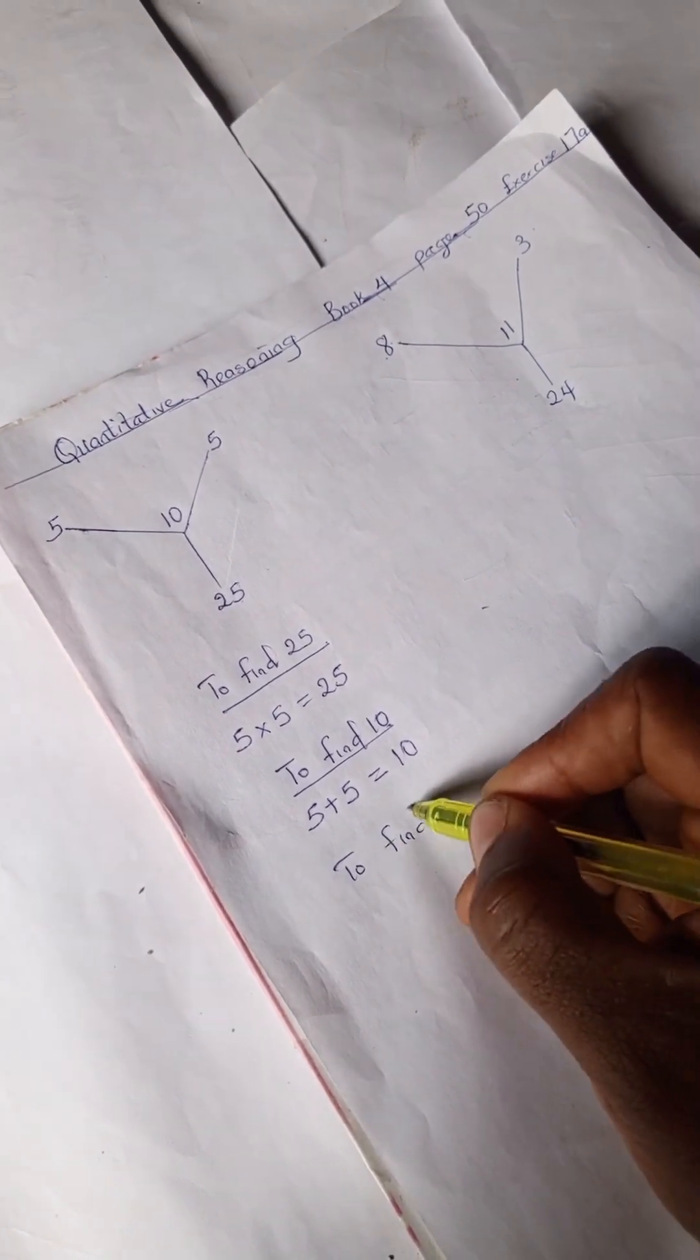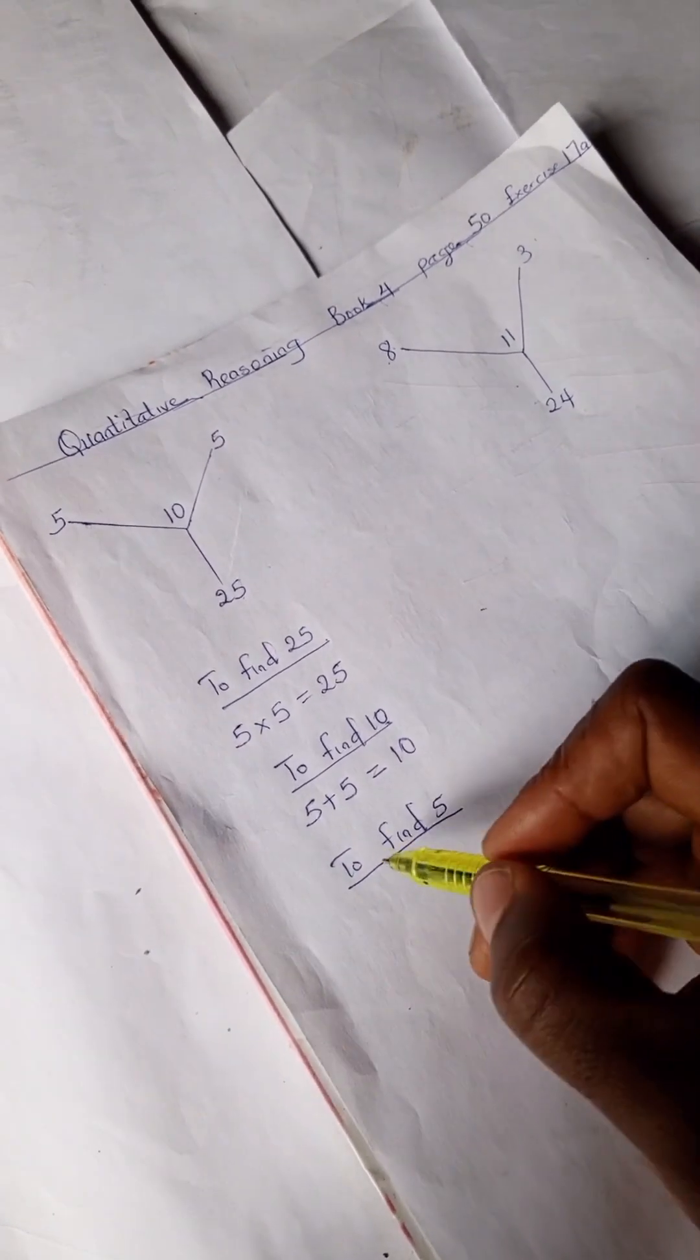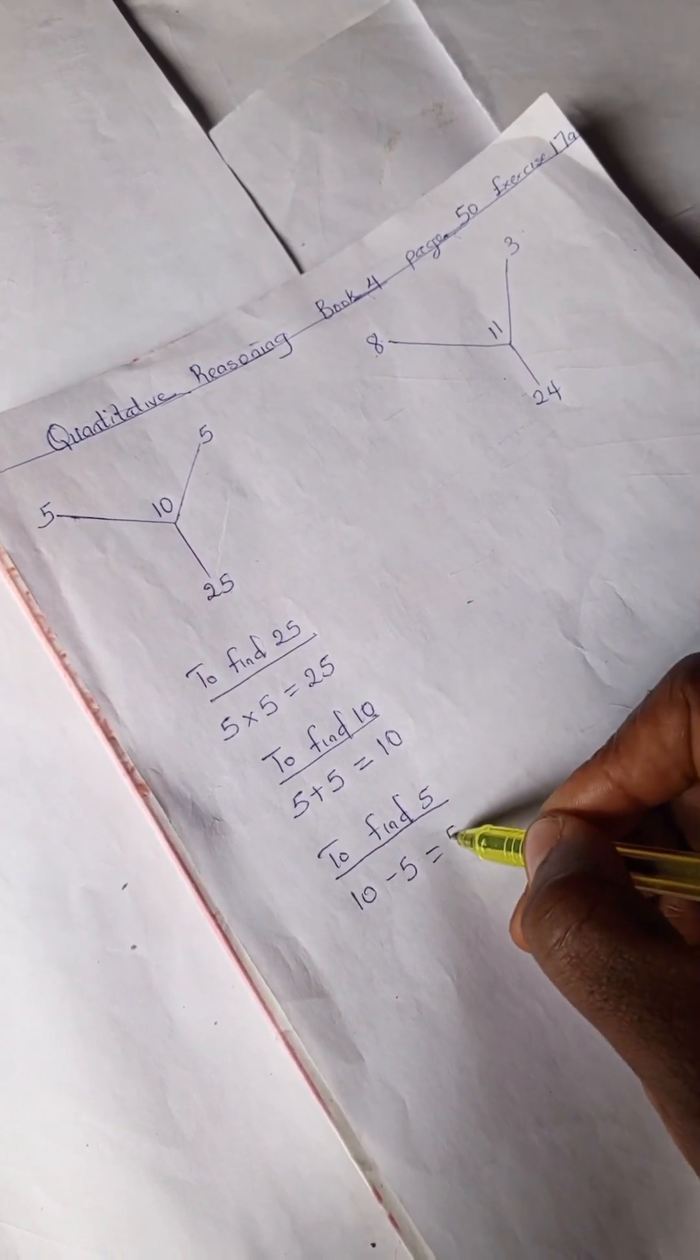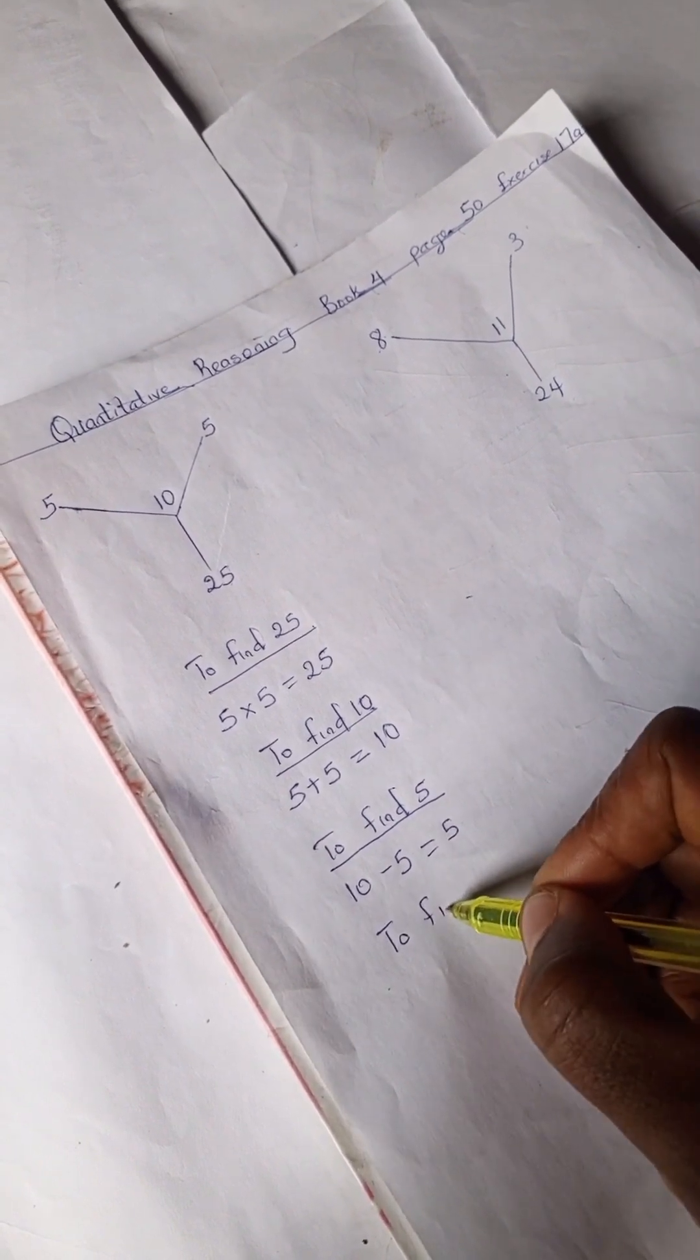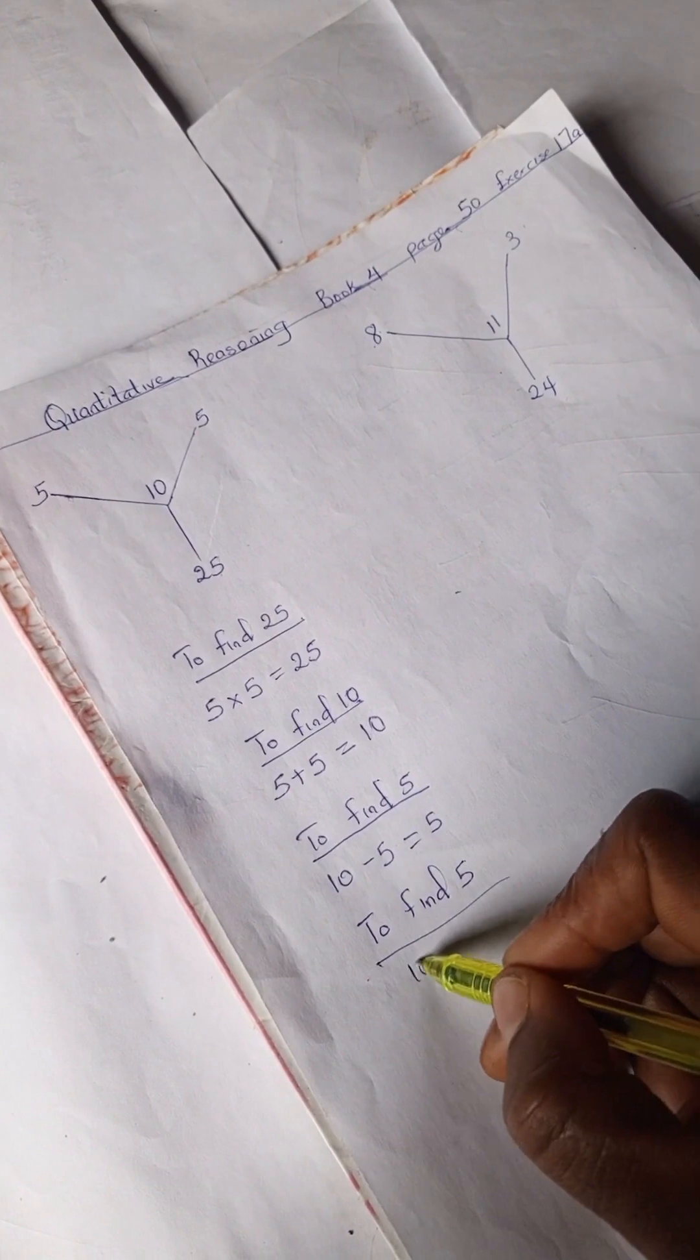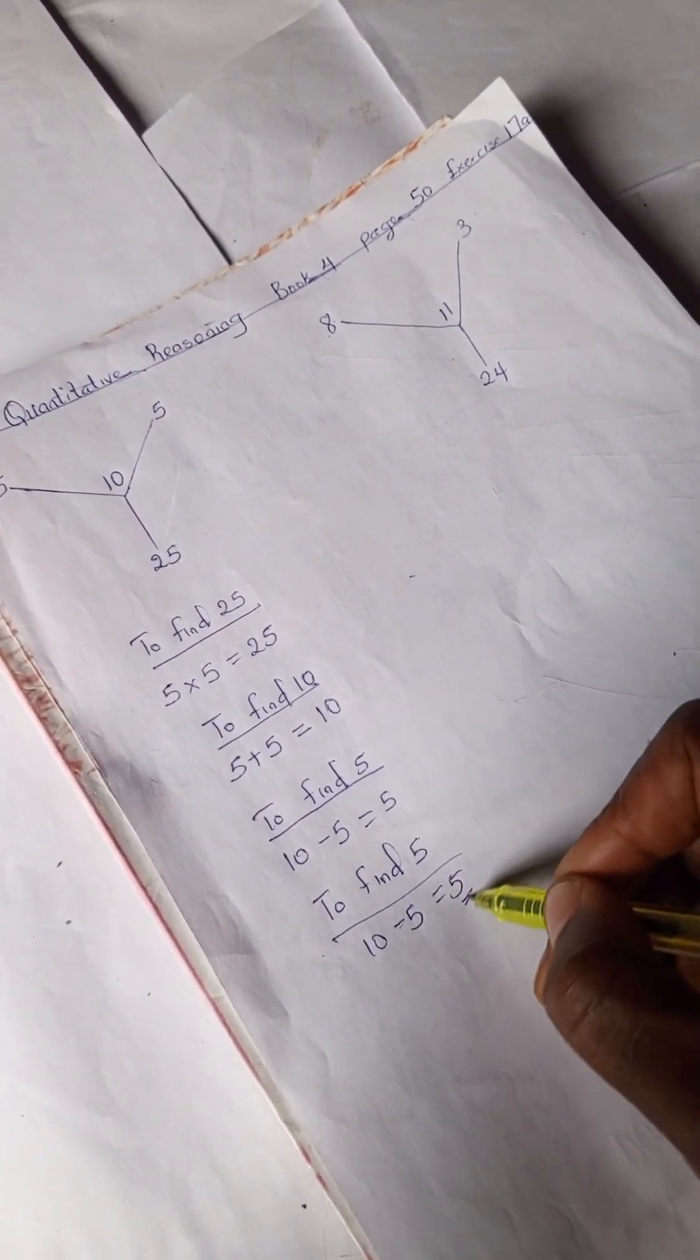To find either of the 5, you can use division or subtraction. So we have our 10 minus the other 5 is 5, and to find the second 5, we have our 10 minus 5, which is 5.